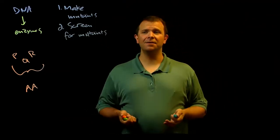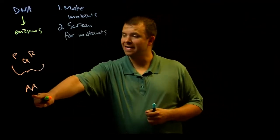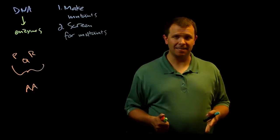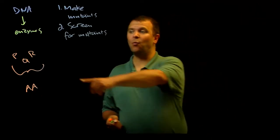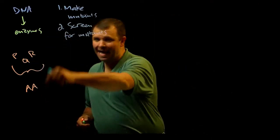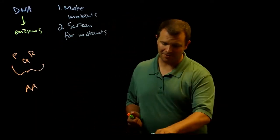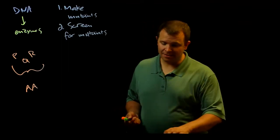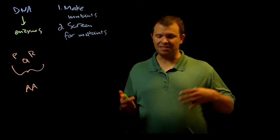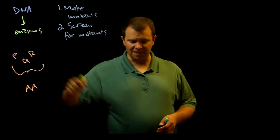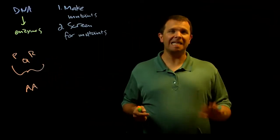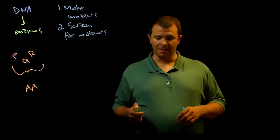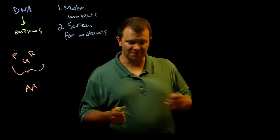If we find one that can't make this amino acid, then we know that one of the enzymes in the pathway must be broken. Next we can actually determine the order of this pathway by feeding this organism intermediates from the pathway.